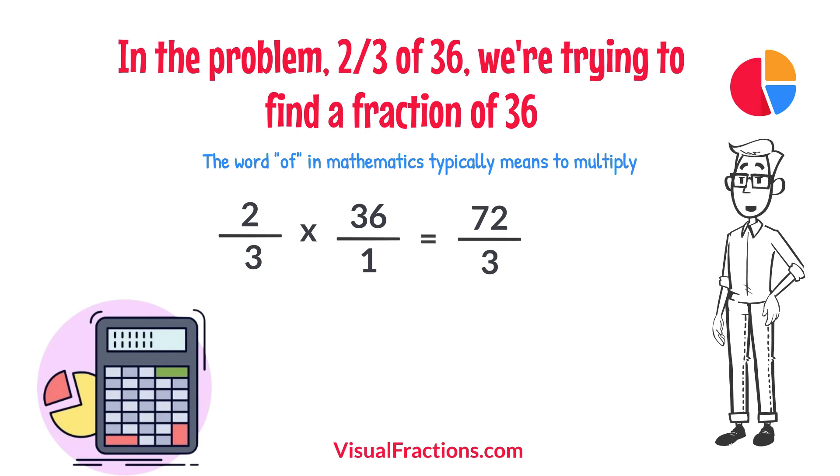To find the final answer, divide the numerator by the denominator. So, 72 divided by 3 equals 24.